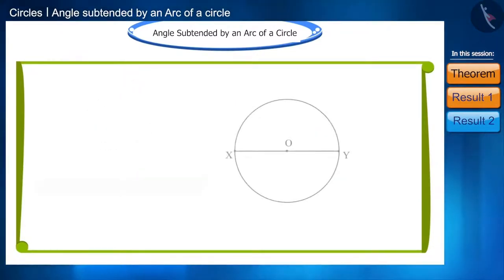If this arc XY is a semi-circle, that is, chord XY is the diameter of the circle, then the angle in the remaining part of the circle, that is, this segment will be formed in this way.